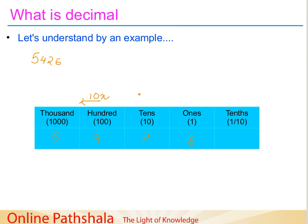Decimal numbers also continue this sequence. With each column after the decimal place representing numbers 10 times smaller than the column to its left. So this is 10 times smaller than the 1's column. And this is maintained further also — the next column will be the hundredths, and so on.